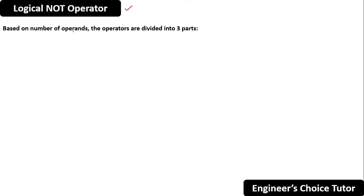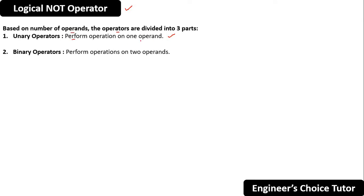Based on the number of operands, operators are divided into three parts. The first one is unary operators, which perform operations on one operand. The second one is binary operators, which perform operations on two operands. The third one is ternary operators, which perform operations on three operands.